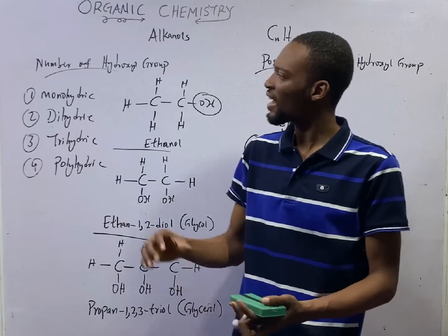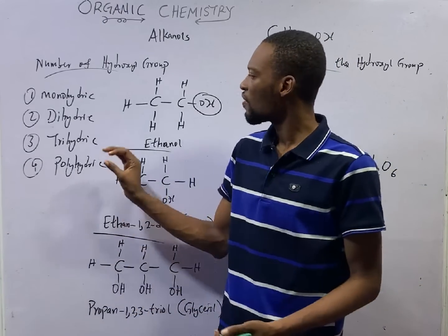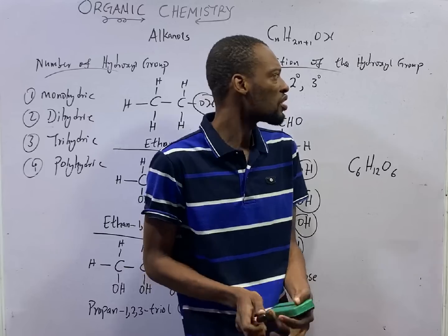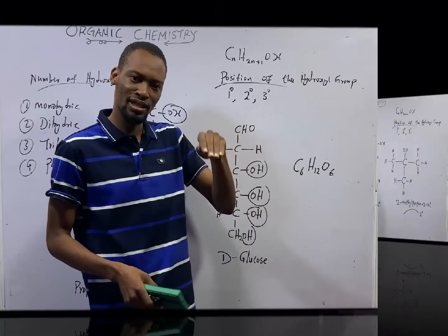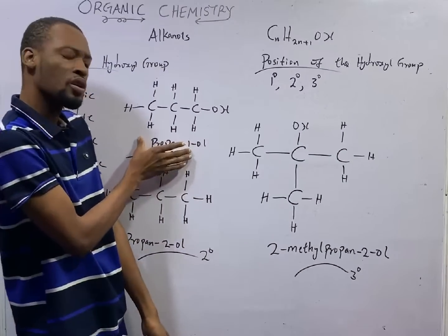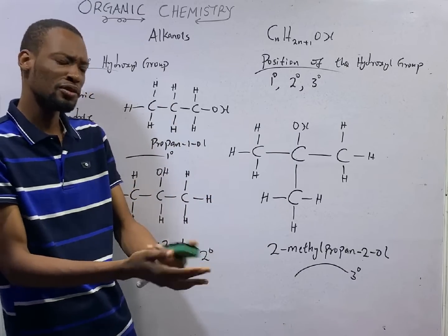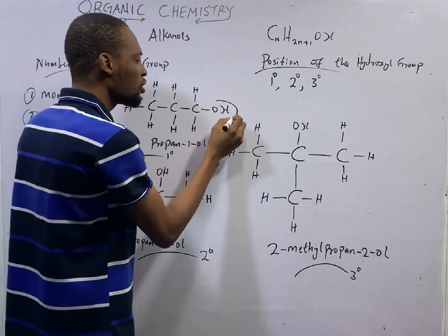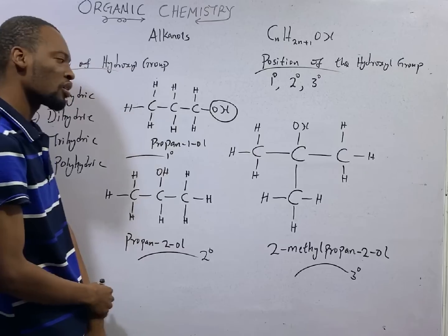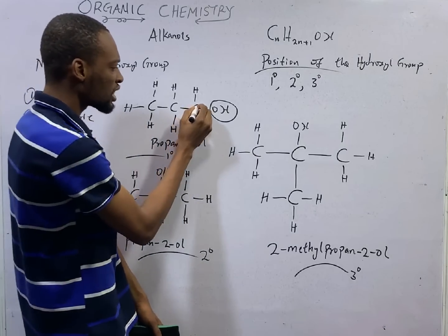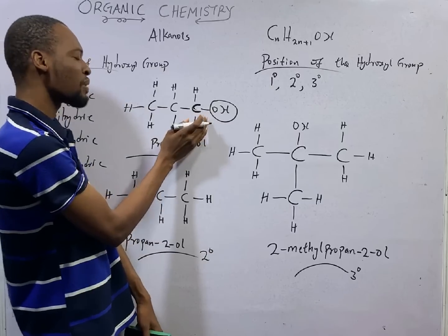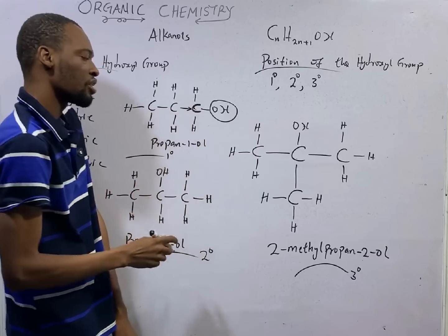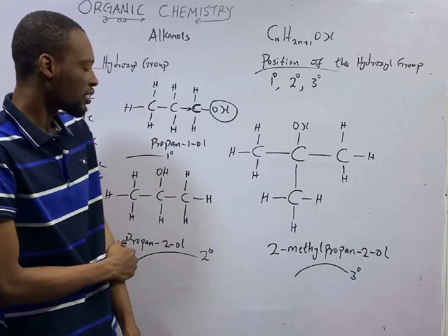Now let's look at the classification of alcohols based on the position of the hydroxy group. This is propan-1-ol, also called 1-propanol. If you look at this propanol, this is the hydroxy group — the alcohol functional group. Look at the carbon it is linked to. This carbon is a primary carbon because it has only one other carbon directly linked to it. So this is a primary alcohol.